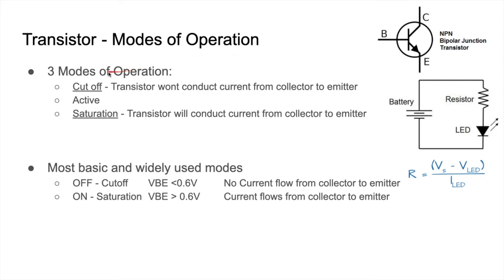The transistor supports three modes of operation. The first one is the cutoff mode, the second is the active mode, and the third is the saturation mode. In cutoff mode, the transistor won't be conducting current from collector to emitter. In saturation mode, the transistor will be conducting current from collector to emitter.